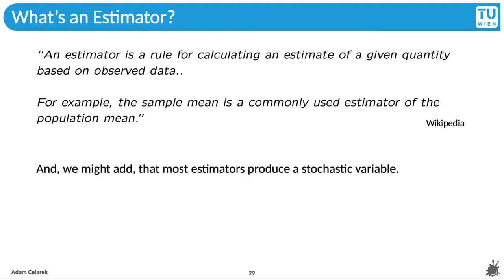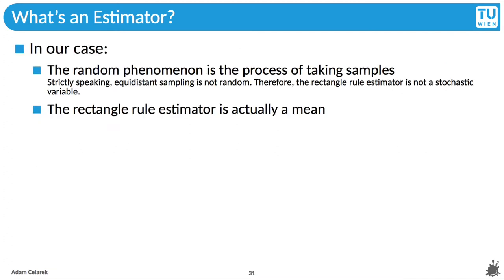We might add that most estimators are stochastic variables as well. The rectangle rule one is not stochastic. What are stochastic variables again? A variable whose values depend on outcomes of a random phenomena. You probably guessed correctly that we are going random now. In our case, we will make the sampling positions random. And algorithms that use random numbers are often called Monte Carlo algorithms, not only those for integration. The name stems from the casino in Monte Carlo.